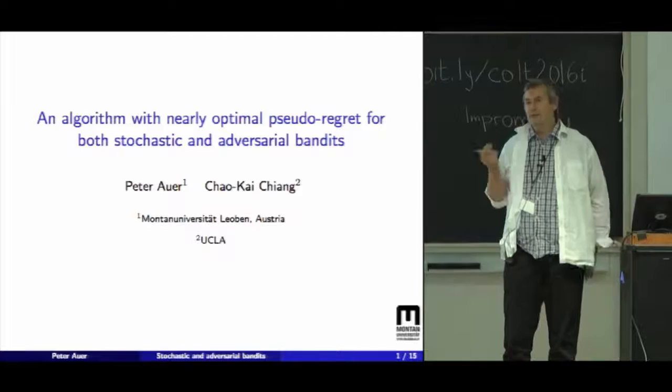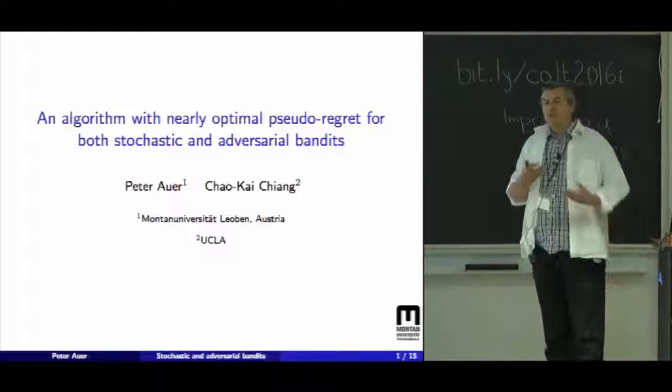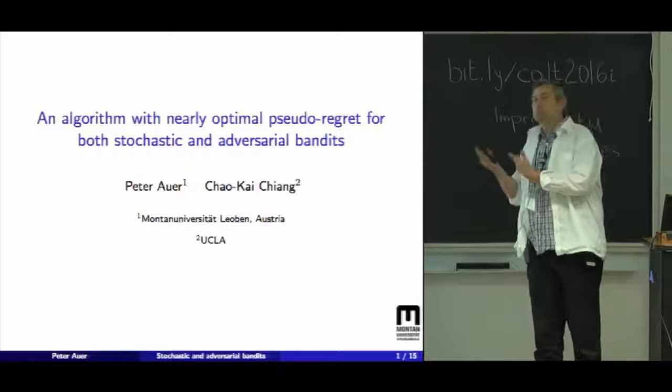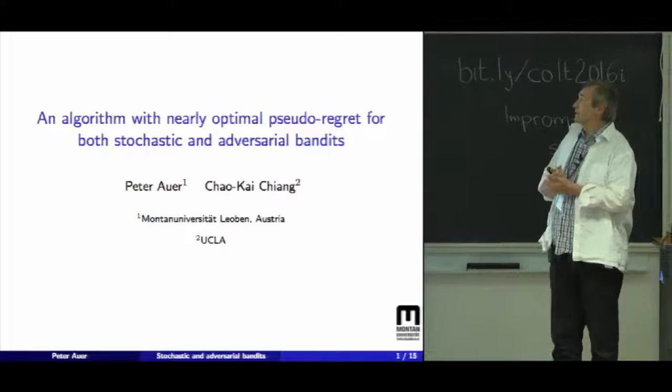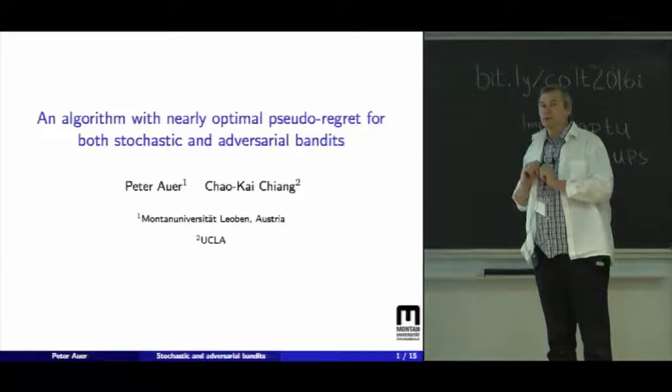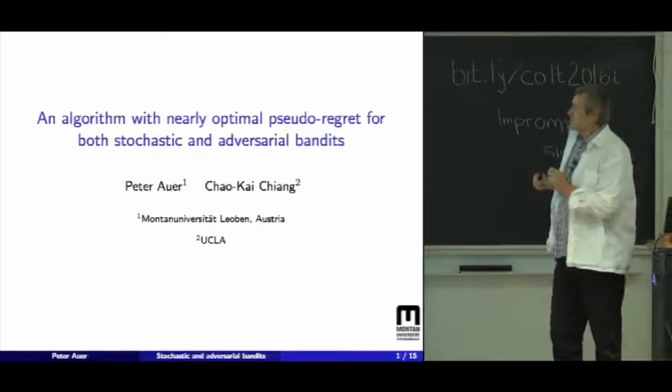If the bandit problem is actually stochastic, we want to take advantage of the strong regret bounds which we have for stochastic bandits. But if it turns out to be not stochastic, we don't want to suffer too much by believing that it's stochastic. So we want to detect early that it's not stochastic and suffer not much more regret than we would have suffered if we would have used an algorithm for the adversarial bandit setting from the beginning.